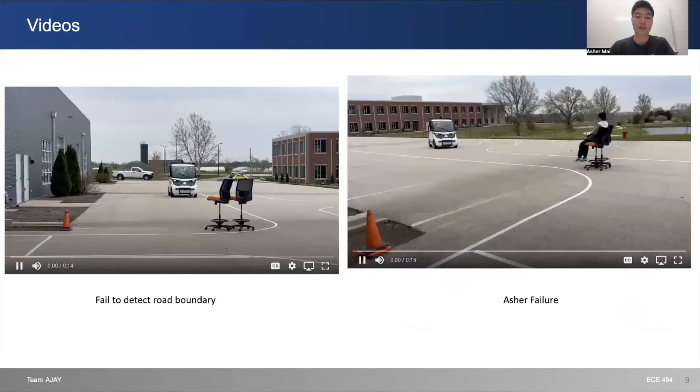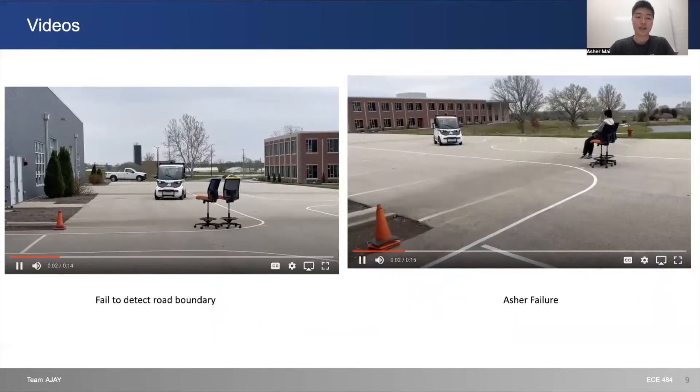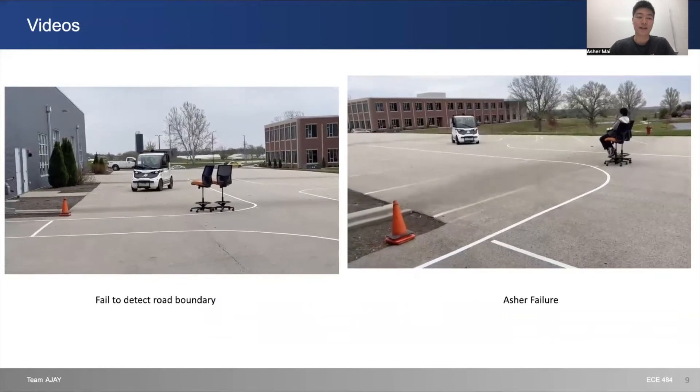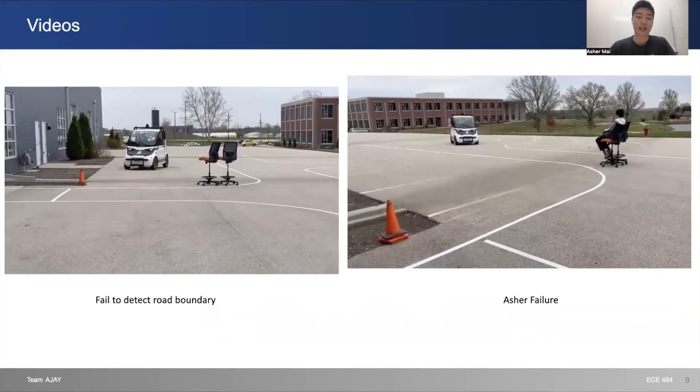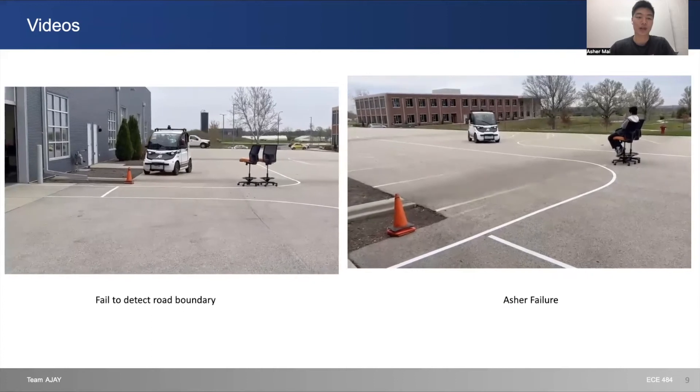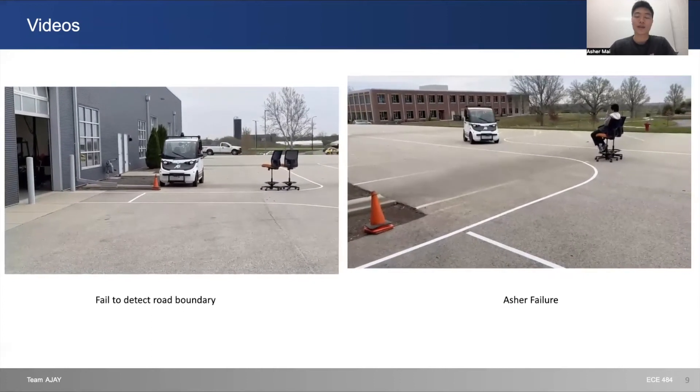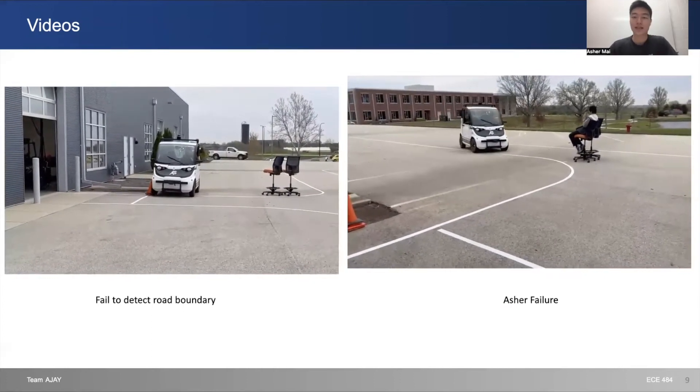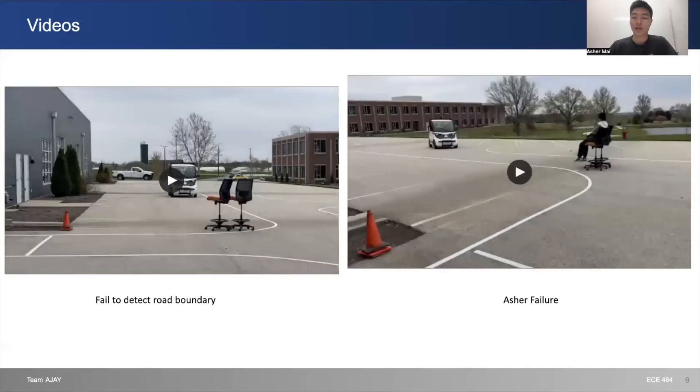Here are some of our runs that initially did not go so well. On the left, we have our car failing to detect the road boundary and going into the cone. On the right, the car failed to detect me sitting on a chair and almost ran into the chair. But thankfully, we stopped the car before it did.